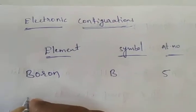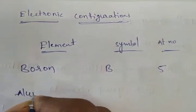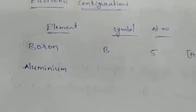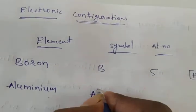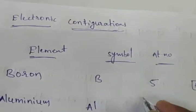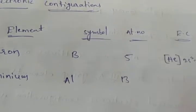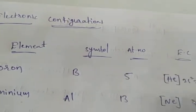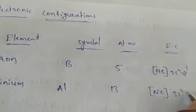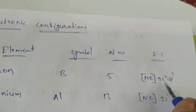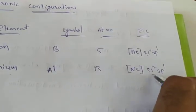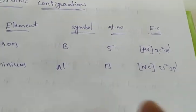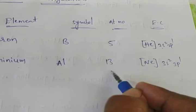After boron, the next element is aluminium. The symbol of aluminium is Al and the atomic number is 13. The electronic configuration is [Ne] 3s² 3p¹. Going down the group, the shells increase — from 2s² for boron to 3s² for aluminium, and the atomic number increases from 5 to 13.